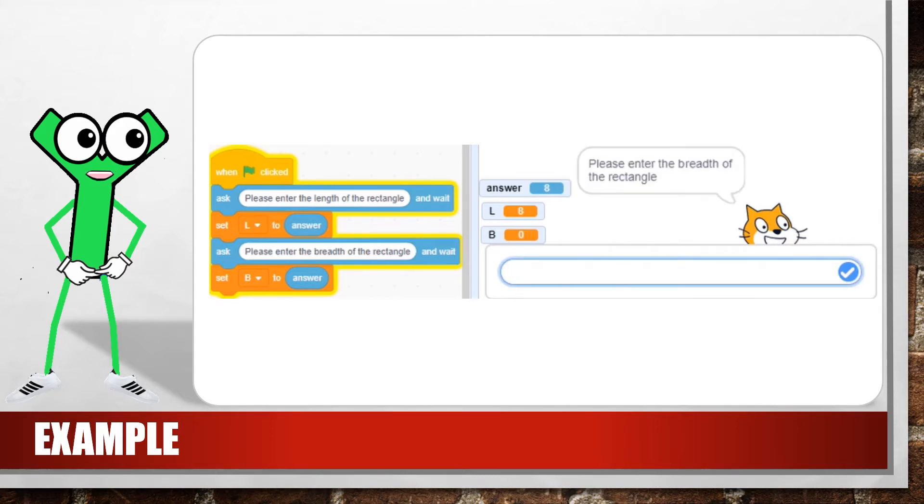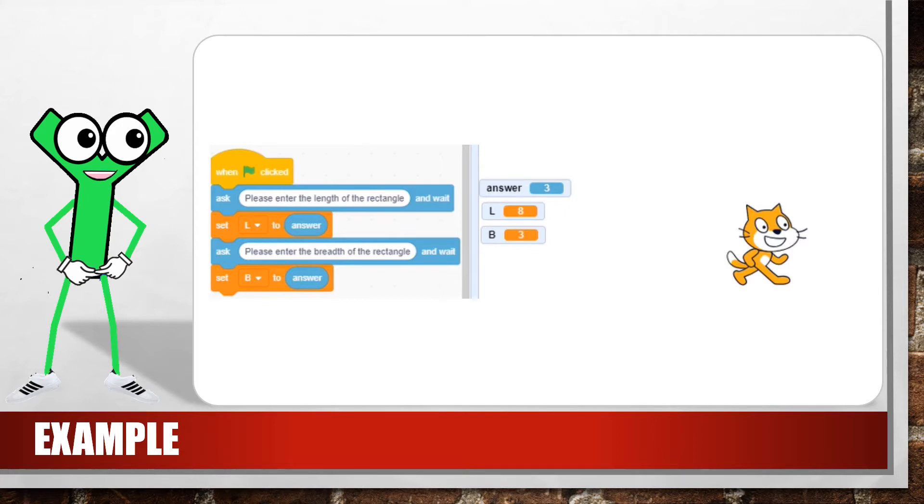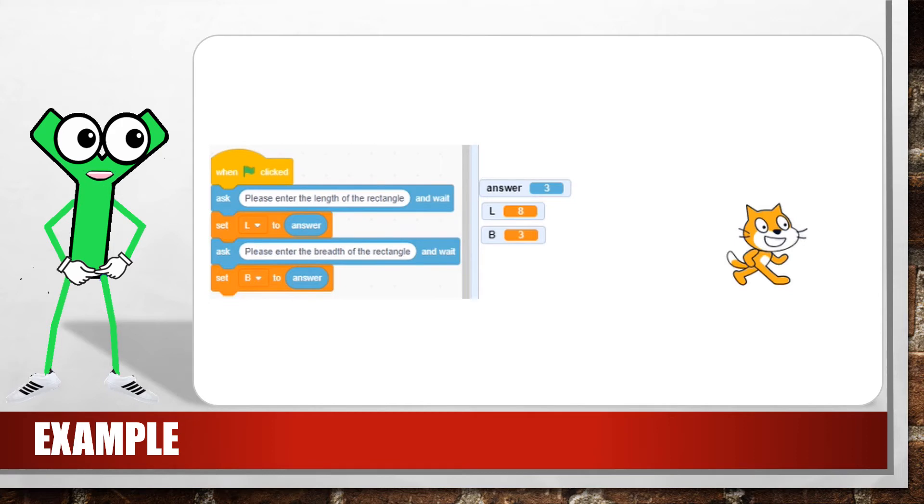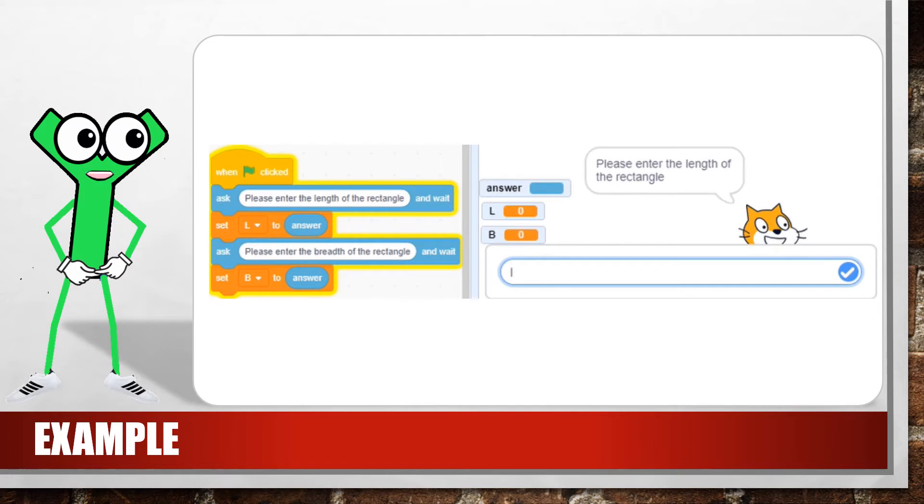If you're writing a program to calculate the area of a rectangle, you will need to enter the length and the breadth of the rectangle. Do you see how the answer block's value was overwritten when you read a value for B? If you did not store the value for the length of the variable in L, it would have been overwritten and you would not be able to use it.